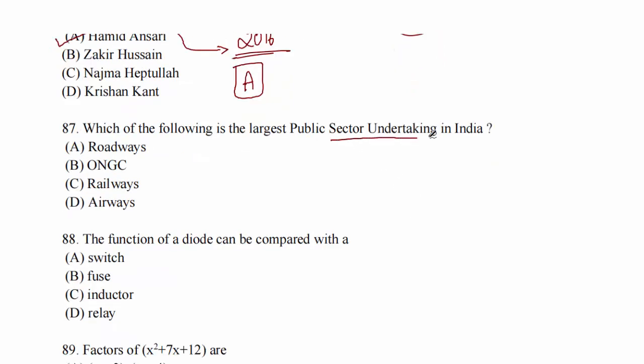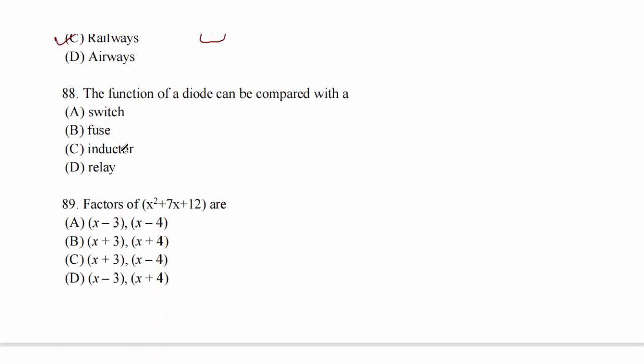Question 87: which one of the following is the largest public sector undertaking in India? Roadways, ONGC (Oil and Natural Gas Corporation), Railways, or Airways? Nowadays everything is getting privatized. ONGC is the answer. Option C. Question 88: the function of the diode can be compared with a switch. Option A.